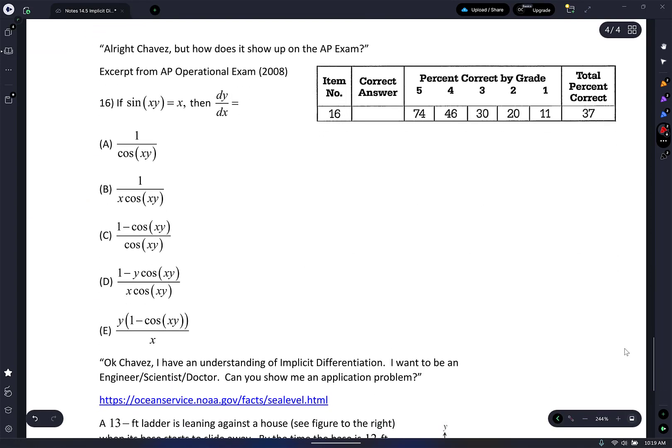Last question. This is a legit AP question from 2008, question 16. Here's the difference between 5s and 4s. Look at the percentage of 5s getting it correct. Look at the big drop between 5s and 4s. 3s are barely staying alive at 30%. If you want to know the difference between a 4 and a 5, the 5s are getting this question correct and the 4s are not. Do you want to take 2 minutes to see if you can figure it out?